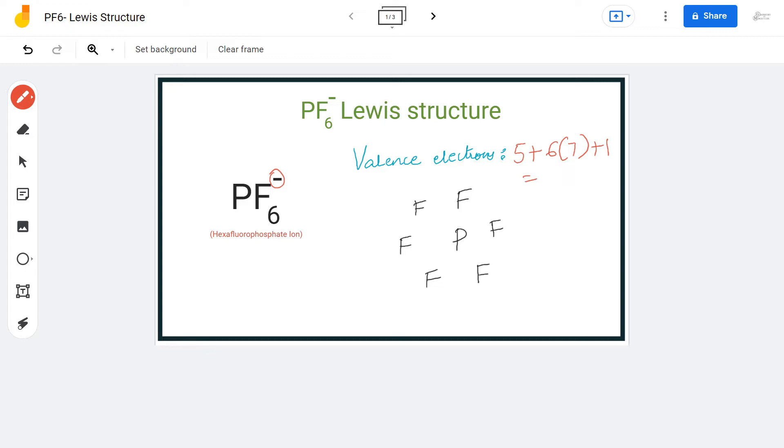Phosphorous has five valence electrons, each fluorine atom has seven valence electrons, and we have to add this electron as well. So in total, we have 48 valence electrons for this molecule.